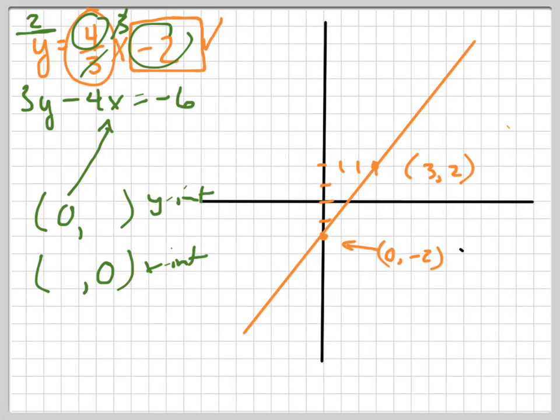This is the y-intercept, and this is the x-intercept. When I plug 0 in for x, I'm going to get 3y equals -6. So y is going to equal -2. So (0, -2). Hey, look at that. It's the same.